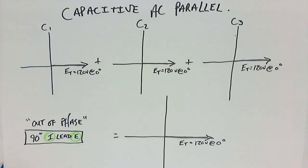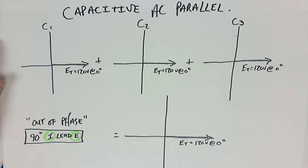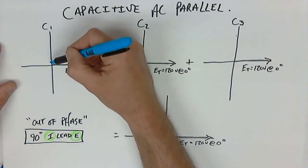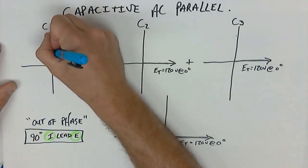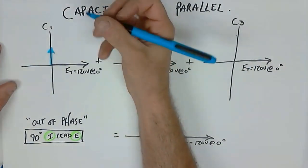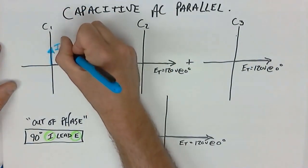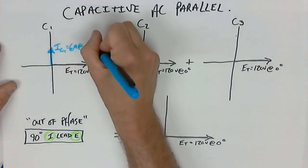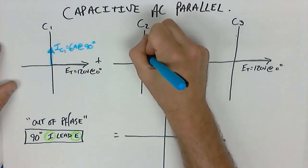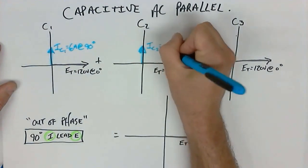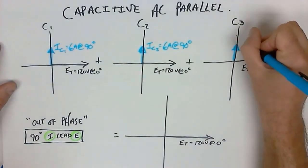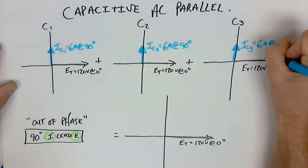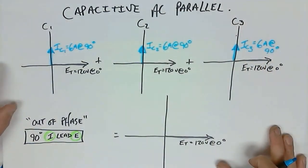What we need to remember is this: the current will lead the voltage. Whenever we have a capacitive component, whether in a series or parallel circuit, the current will lead the voltage. If the current leads the voltage, that means it's sketched up here — all capacitive currents are at precisely 90 degrees. IC1 is 6 amps at 90 degrees, IC2 is 6 amps at 90 degrees, and IC3 is 6 amps at 90 degrees.